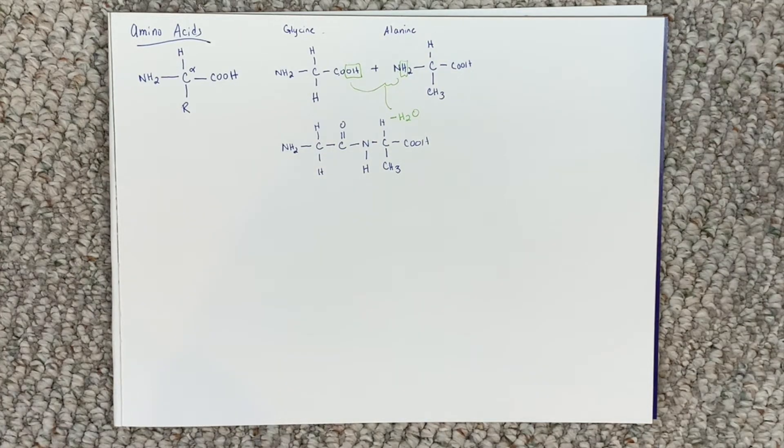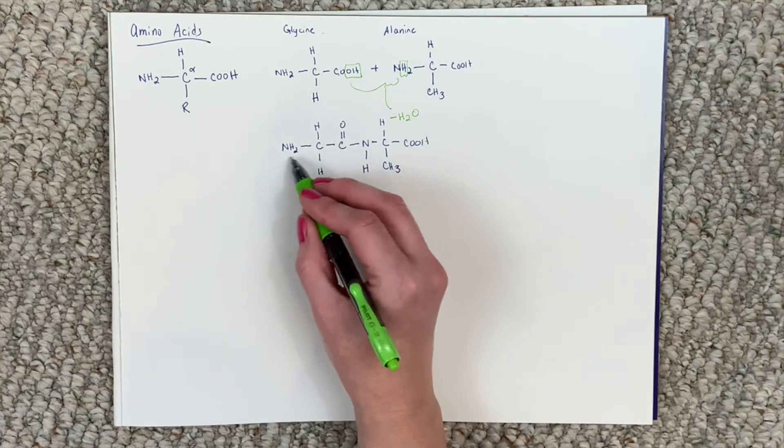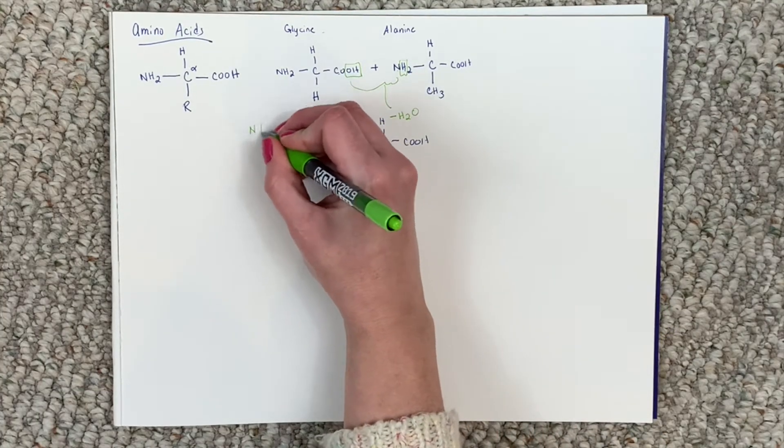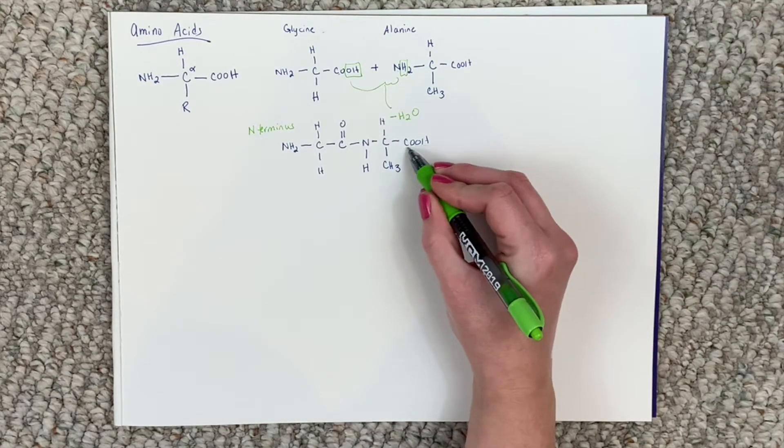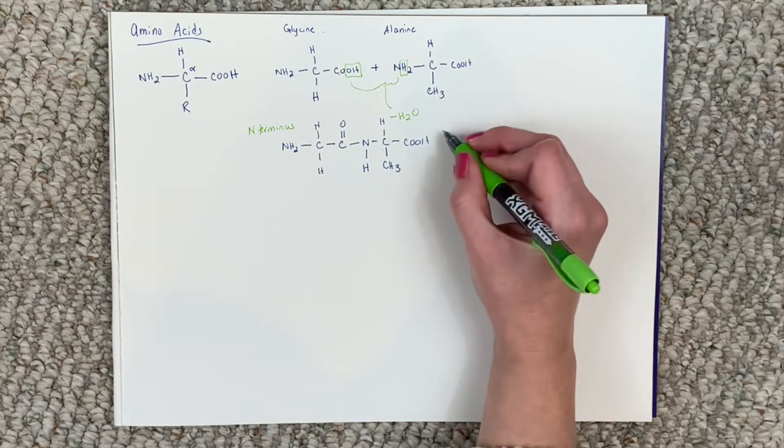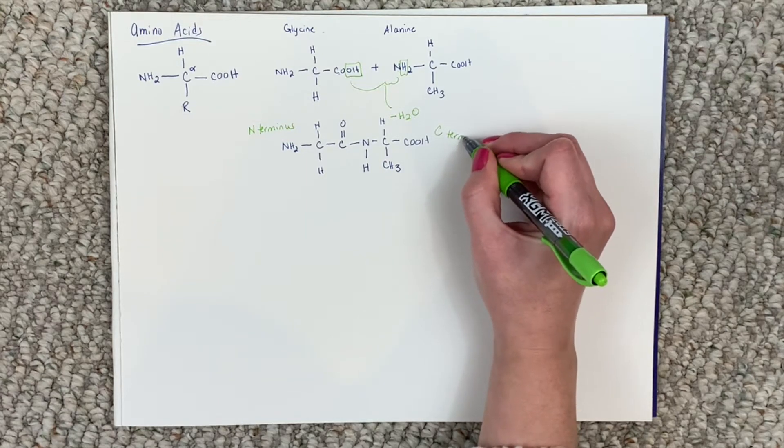Now there's a couple terms you want to be familiar with. So this end where the NH2 is, we call this the N-terminus. Whereas your C, where you have your COOH group, this is referred to as the C-terminus end.